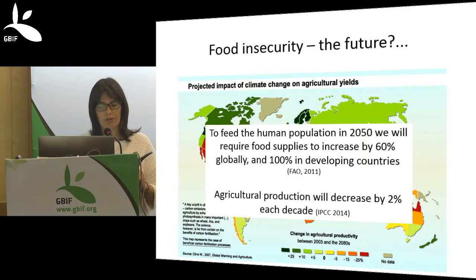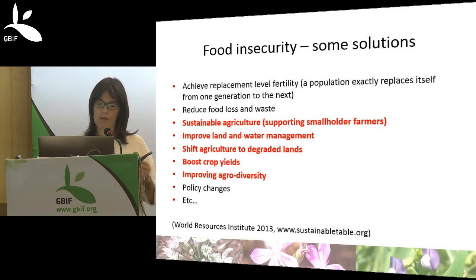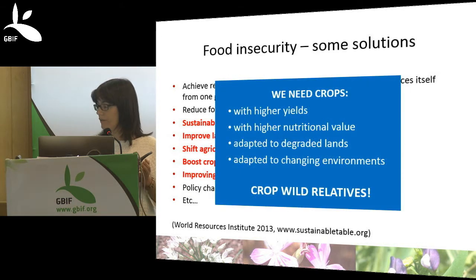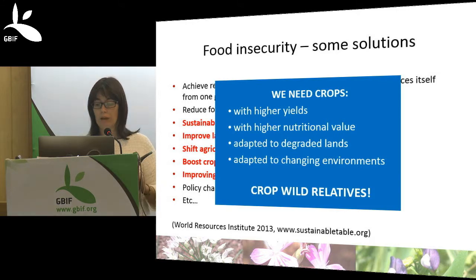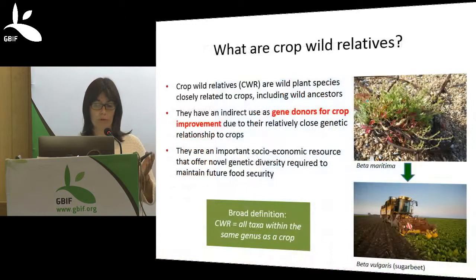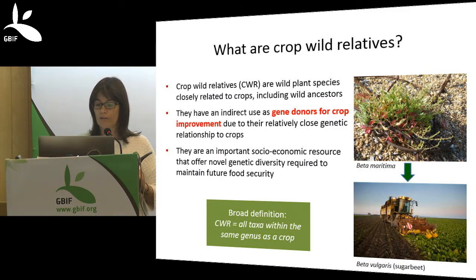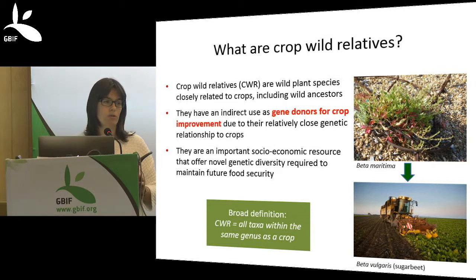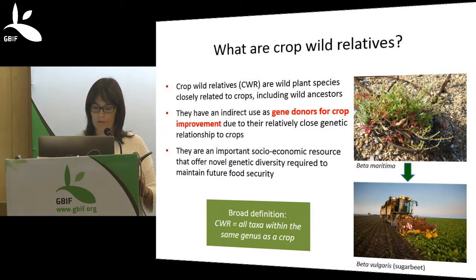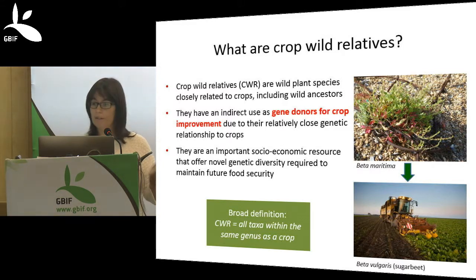What we need are crops with higher yields, higher nutritional value, adapted to degraded lands and changing environments — and crop wild relatives address this issue. These are wild plant species closely related to crops, with indirect use as gene donors for crop improvement because of their genetic proximity to cultivated crops. They are an important socio-economic resource offering novel genetic diversity required to maintain food security in the future. A widely used definition is that crop wild relatives are all taxa falling within the same genus as a crop.